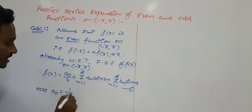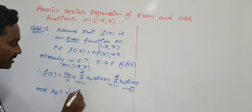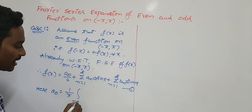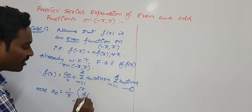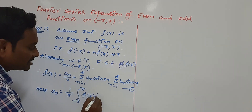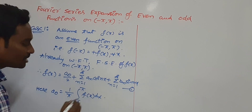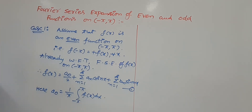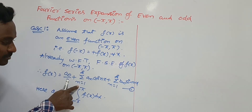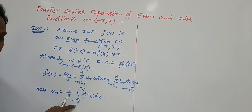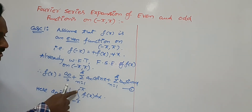Already we know that a₀ = (1/π)·∫₋π^{+π} f(x) dx. This is called Euler's formula. We observe that the integration limits are -π to +π.